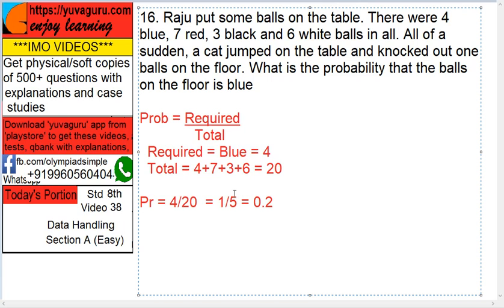Total is what? 4 plus 7 plus 3 plus 6. All. So 20. Probability equals 4 upon 20, required upon total. So 1 upon 5.